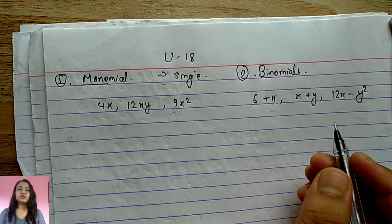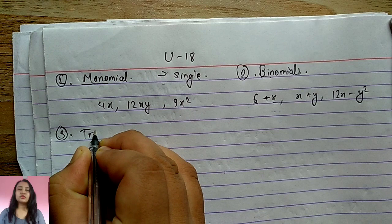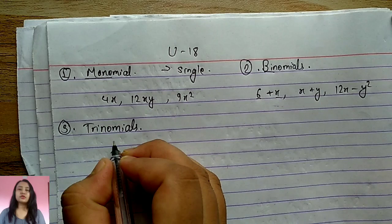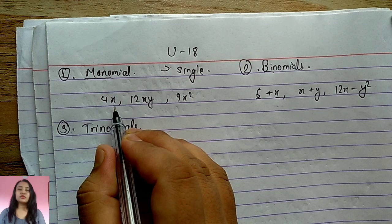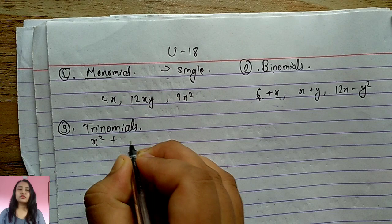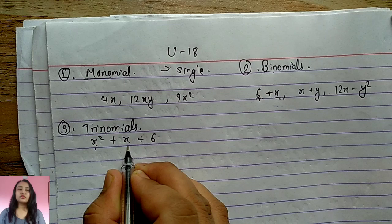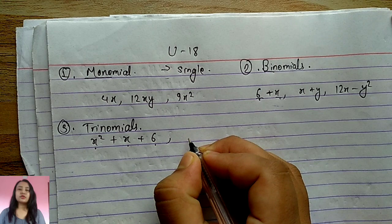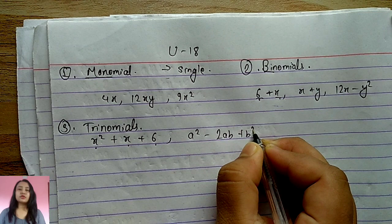Next is the trinomial. A trinomial has three terms in the mathematical expression. For example, x² + x + 6 has one term, two terms, three terms — so it is a trinomial. Similarly, a² − 2ab + b² also has three terms and is known as a trinomial.